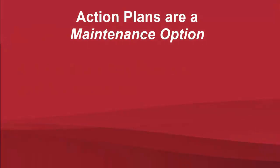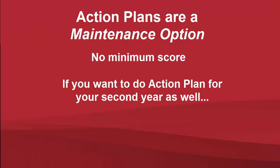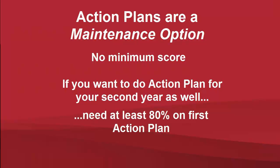Remember, action plans are a core maintenance option. Since these are done in your maintenance year, there is no minimum score required to pass the action plan and maintain your core. However, if this is your first maintenance year doing an action plan and you want to do an action plan for your second year as well, then you need to achieve at least 80% on your first action plan.